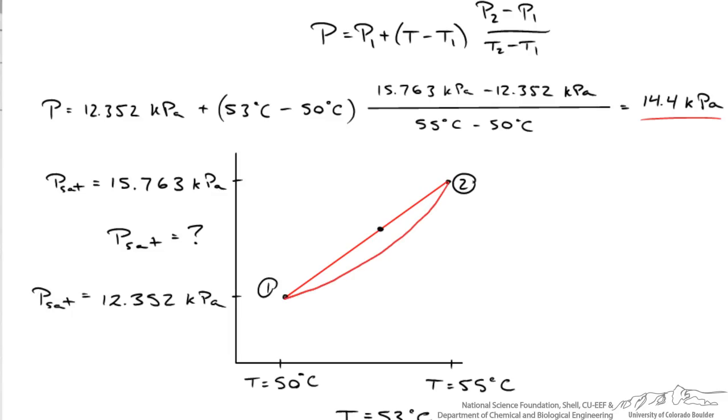But the real data look like this. And the actual value if we don't use linear interpolation, the exact value is about 14.3 kilopascal. So linear interpolation makes our life easy but there are small errors associated with that.